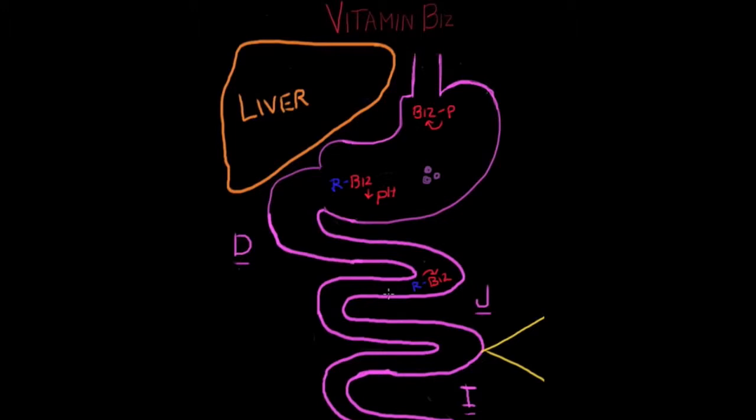In the duodenum, which has a more neutral pH, there's a high affinity for intrinsic factor, IF, to pick up the free B12 to create the vitamin B12 intrinsic factor complex.